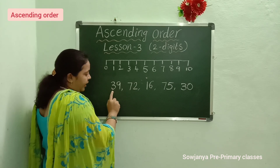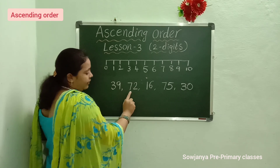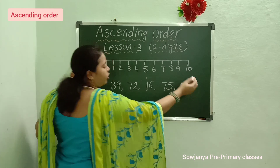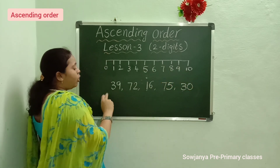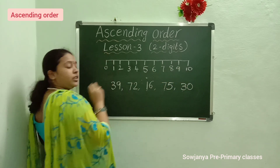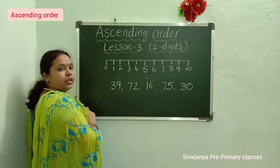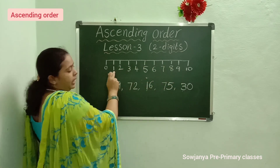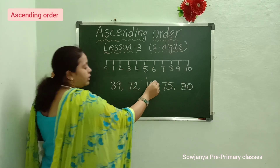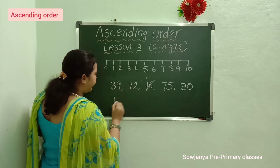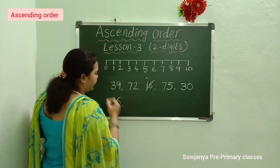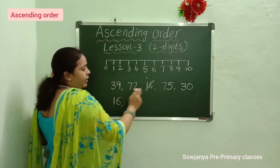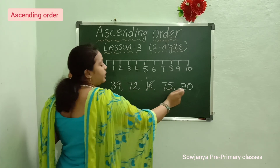In the 10's place we have: 3, 7, 1, 7, and 3. So in all these numbers, which is the small number? Yes, 1. So cross out 16 and write 16 here. Next, again observe the 10's digits: 3, 7, 7, 3. In this, which is the small number?